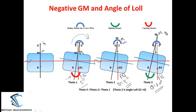If the righting moment generated at 20° is sufficient, the ship will come back to 5°. At 5° a capsizing moment generates again, pushing the ship back to 15°, then 20°. So the ship oscillates between 5° and 20°, about the equilibrium at 15°. At θ = 15°, GZ is 0, and this angle is called the angle of Loll.